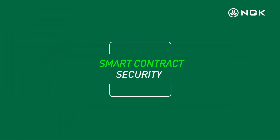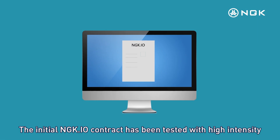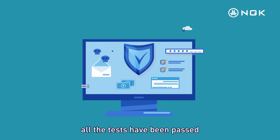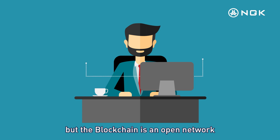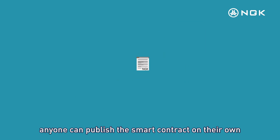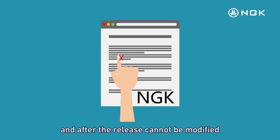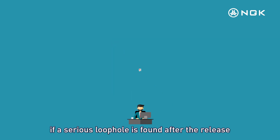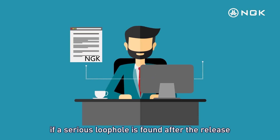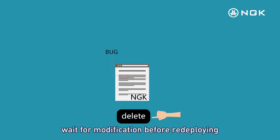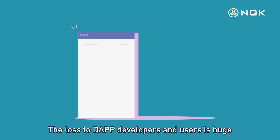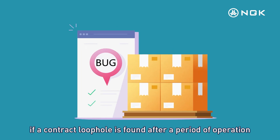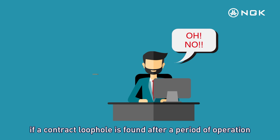Smart Contract Security. The initial NGK.io contracts have been tested with high intensity and all tests have been passed, so there is no need to worry about any problems. However, since blockchain is an open network, anyone can publish a smart contract on their own, and after release it cannot be modified. If a serious loophole is found after release, the contract must essentially be abandoned and redeployed after modification. The loss to Dapp developers and users can be huge if a contract loophole is found after a period of operation.